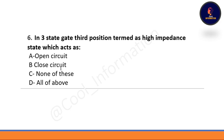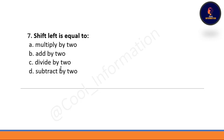Question 6: In a three-state gate, the third position is termed as the high impedance state, which acts as — option A: open circuit, option B: closed circuit, option C: none of these, option D: all of the above. The correct option is A, which is open circuit.